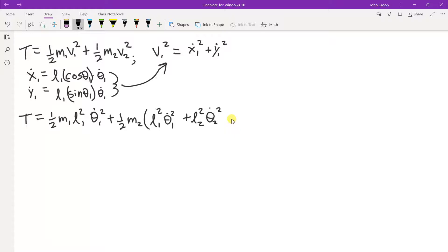Then we have plus, we have the cross terms, plus 2L1 L2 theta 1 dot theta 2 dot cosine of theta 1 minus theta 2. Phew! And there you go. That's the kinetic energy of the system.